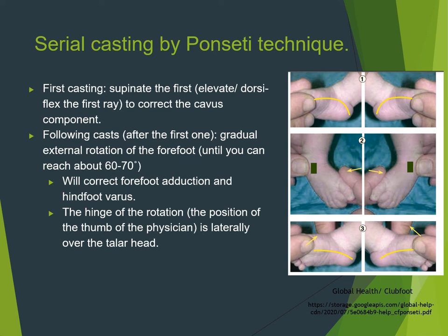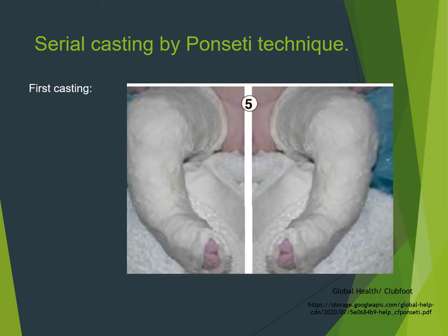After the first cast addresses cavus, subsequent casts use external rotation to correct both hindfoot varus and forefoot adduction simultaneously. The goal is to reach approximately 60 to 70 degrees of external rotation, which corrects both components together.